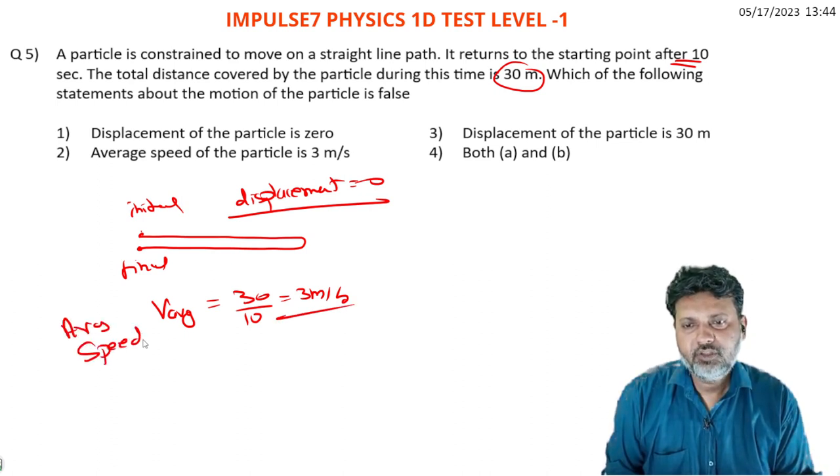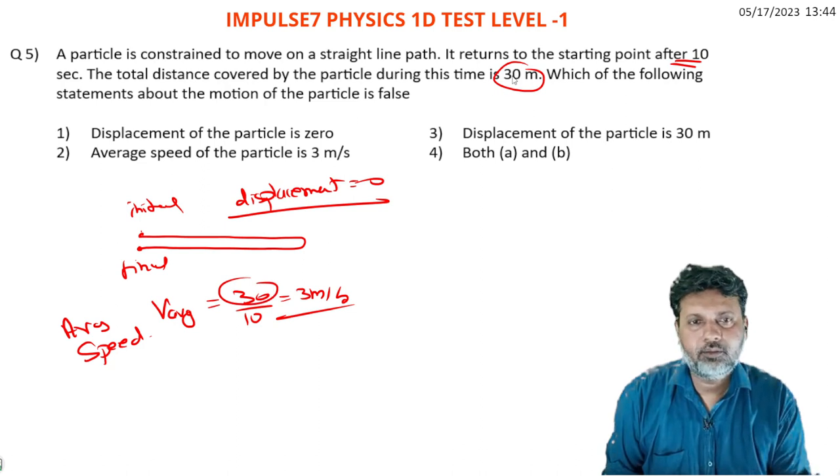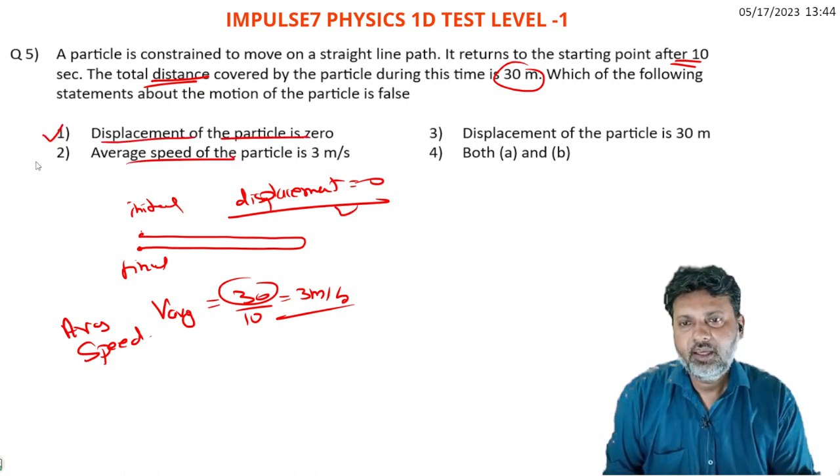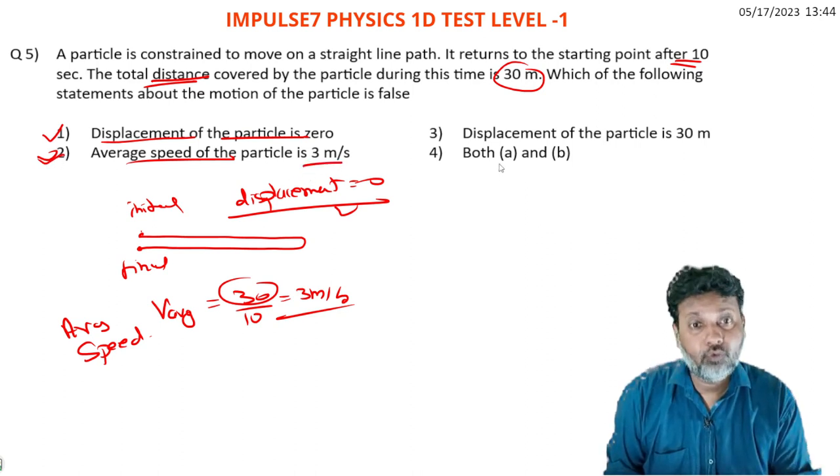Total distance versus displacement. Displacement of the particle is zero - this is a correct statement. Average speed will be 3 meters per second, so statement false.